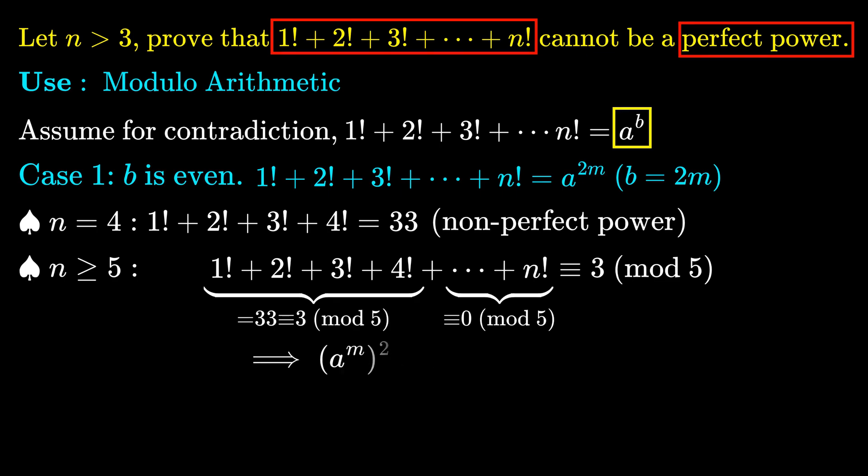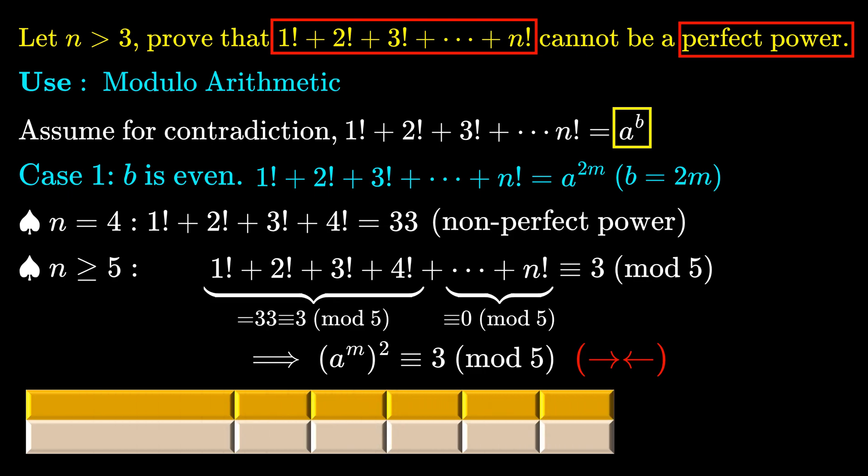However, this means we have a perfect square congruent to 3 mod 5, which is a contradiction. We can check all possible residues of squares mod 5 to see that the quadratic residues mod 5 are only 0, 1, and 4. 3 is not a quadratic residue. Hence, the sum of first n factorials cannot be an even power.